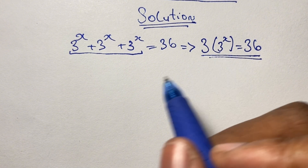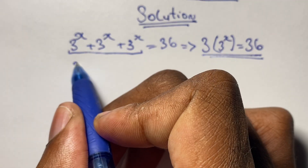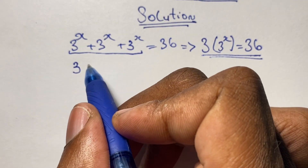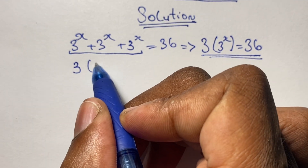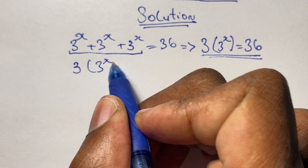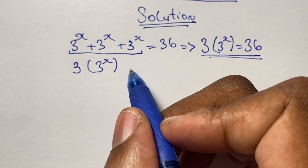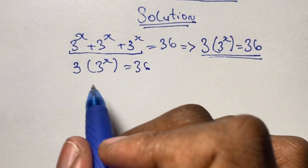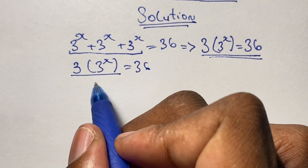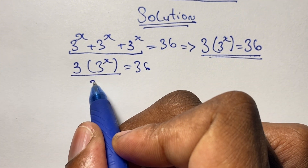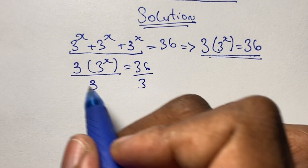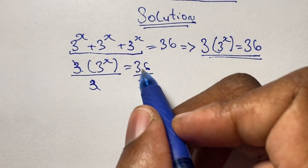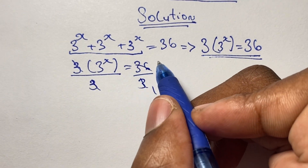From here we can divide both sides by 3. So we rewrite 3 times 3 to the power of x equals 36, and divide both sides by 3. On the left, the 3 cancels out, and on the right we have 36 divided by 3, which gives us 12.